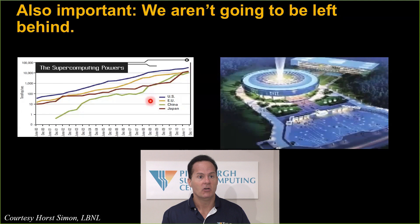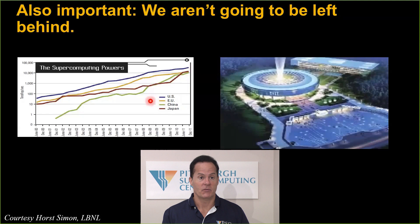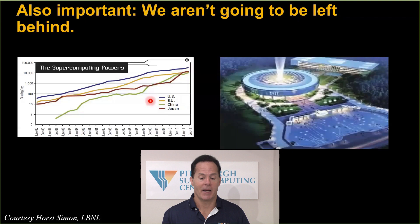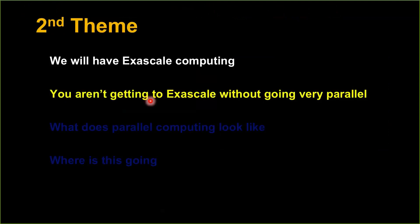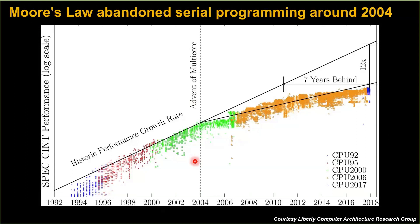Those developments filter down to the rest of us, whether you need to be there or not. Some of you will be using these exascale machines as quickly as you can get your hands on them. But even if departmental resources are the level you want to work at, everything filters down from that leading edge fairly rapidly. You're not getting to that level without going very, very parallel. That's the main theme of this talk: you can only use these machines — or even your desktop machines today — effectively if you're doing parallel programming. Serial programming is hopeless anymore in terms of getting reasonable performance out of any hardware platform, including your smartphone.